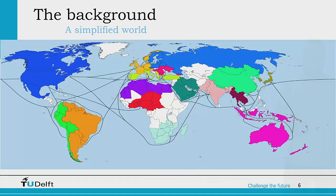The world in the model is simplified. Instead of having 250-260 countries, there are only 16 areas, and they consist of a number of countries as you can see in this overview. Each of the regions is represented as one country and one economy, and within each economy several ports can be visited during the game with your vessels.